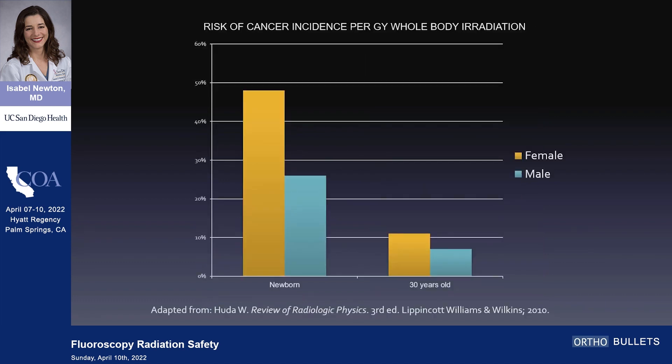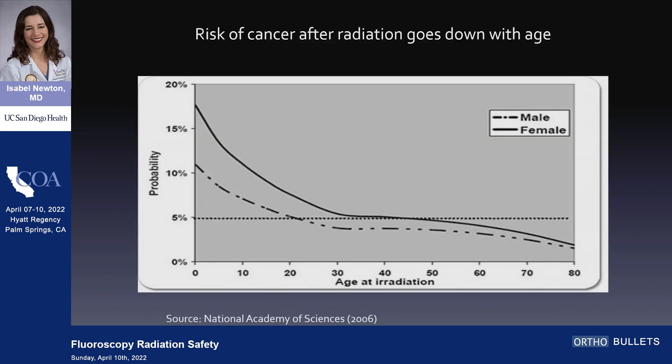Let's look at radiation sensitivity — it goes down as we get older. All of our trainees and young partners are going to be more radiosensitive. Especially female partners are going to be more radiosensitive than older and male partners. Just be cognizant of this and make sure that people have adequate protection.